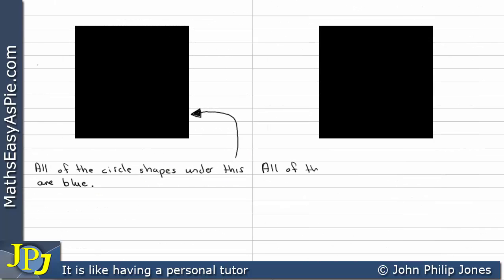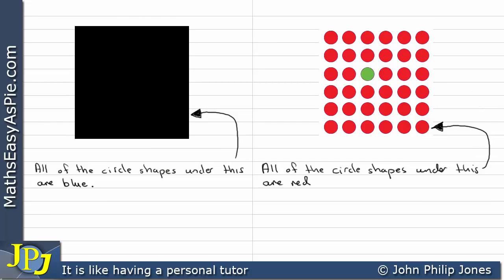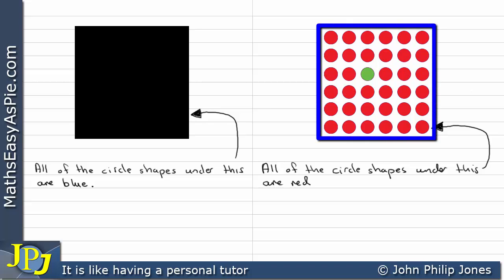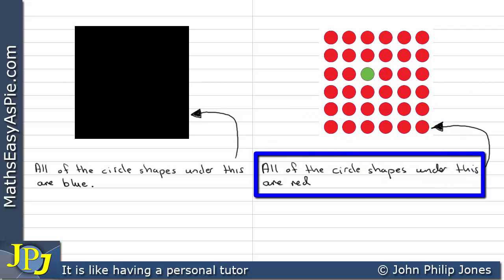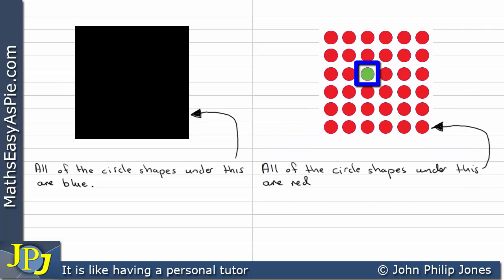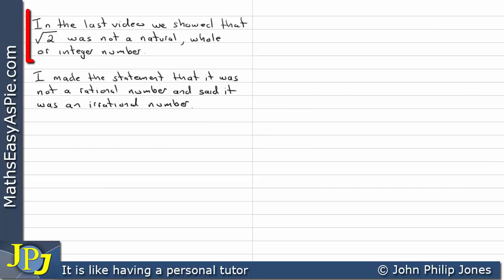All of the circle shapes under this are red. The black rectangular shape has been removed and if we look at the actual shapes, we can see that in fact they're not all red — we found one that's actually green. Consequently, this particular statement is not correct. The reason it's not correct: we found a contradiction, we found that they're not all red because we found this green one.